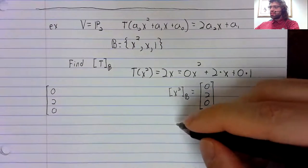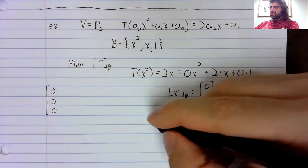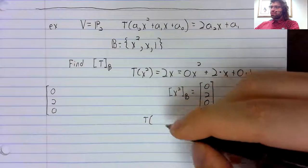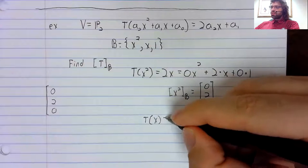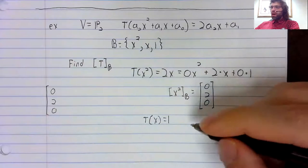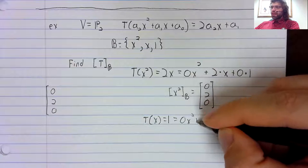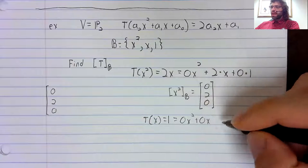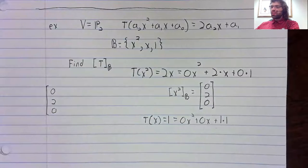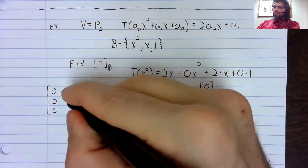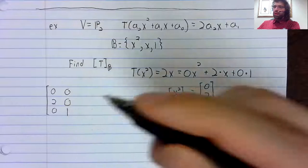Now we'll just repeat this. We'll apply this transformation to x. We'll get one, which is zero x squared plus zero x plus one times one. So zero, zero, one.